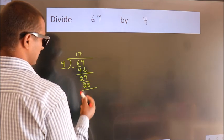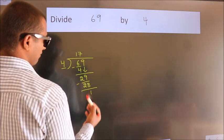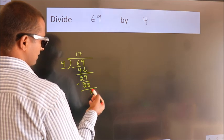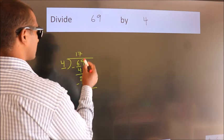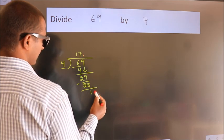Now, we subtract. We get 1. After this, no more numbers to bring it down. So, what we do is, we put dot take 0.